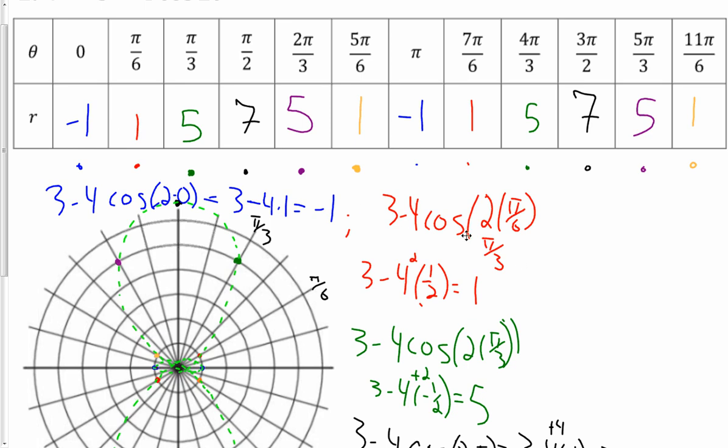So plugging in 0, 3 minus 4 cosine of 2 times 0. Cosine of 0 is 1, so 3 minus 4 is negative 1. Next one, 3 minus 4 cosine of 2 times π/6, right? We're jumping by π/6. 2/6 is 1/3, and cosine of π/3 is half. 3 minus 4 half is 3 minus 2, which is 1. Continuing. And I'm only going to do up to the orange point, and then it's going to repeat, right? The orange point, and then it's going to repeat from what we have here. So hence the color coding, not trying to be confusing.